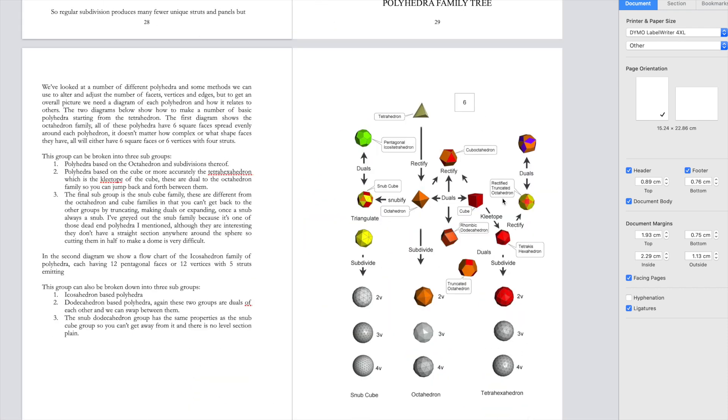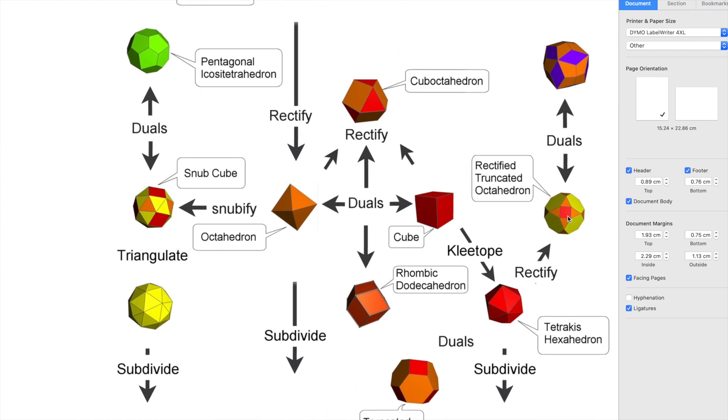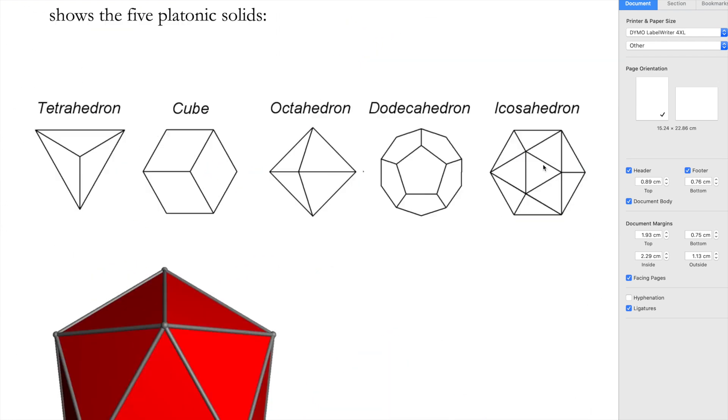All geodesic domes, all domes of any kind, have a base polyhedra: icosahedron, dodecahedron, octahedron, cube or tetrahedron. You can rule out the tetrahedron because it's too basic and you can also rule out the cube because that's used for square building.